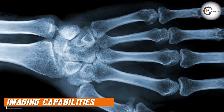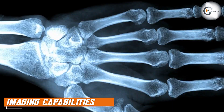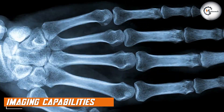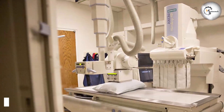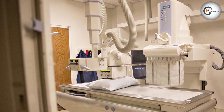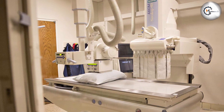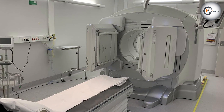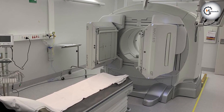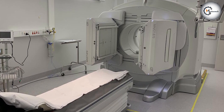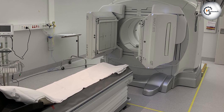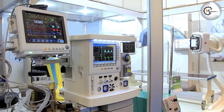X-ray machines are ideal for imaging soft tissues and bones, making them valuable tools for medical diagnostics. However, they may not be able to penetrate thicker or denser materials, which can limit their effectiveness in industrial settings. Gamma-ray machines, on the other hand, have the ability to penetrate through thick and dense materials, allowing for more detailed imaging of industrial equipment or infrastructure.